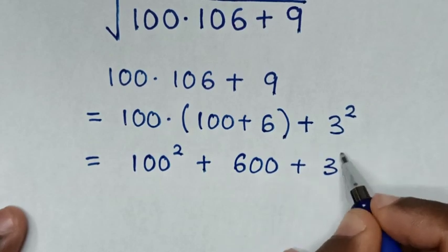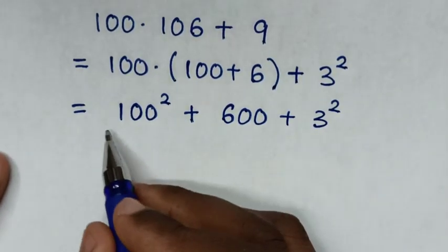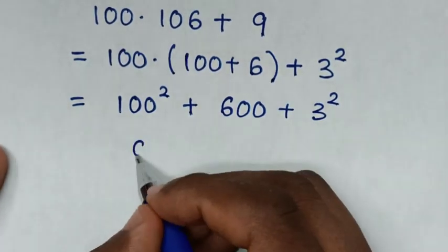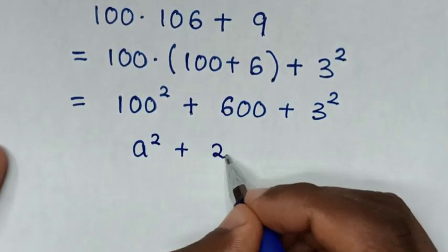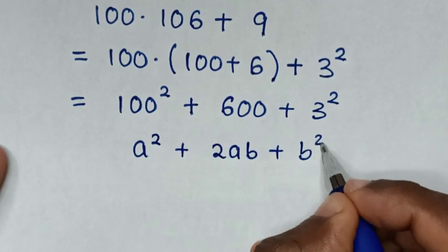Then we'll make this expression in the form of a rule: a squared plus 2ab plus b squared is equal to (a plus b) bracket squared.